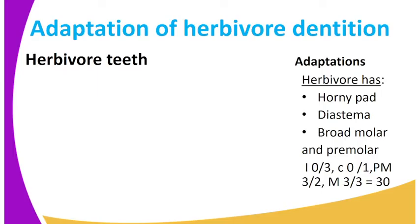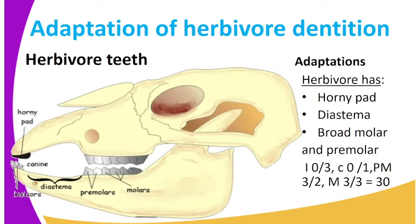As you can see, here are the herbivorous teeth. The teeth have the horny pad, which is on the upper jaw. We have the canines, we have the incisors, and between the canine and the premolar we have the diastema. We also have the premolars and the molars. Most herbivores lack the upper incisors; instead, they have the horny pad against which grass is pressed while being cut.